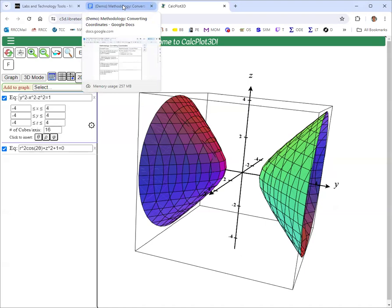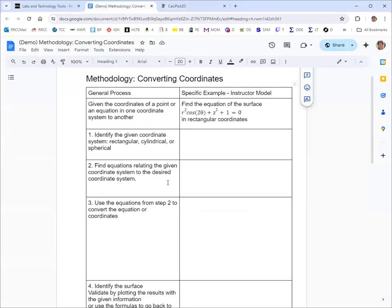So there's our hyperboloid of two sheets and we've converted the coordinate system correctly. So that wraps up converting coordinates methodology, instructor model. Go on to the fill in the blanks in your return examples, and I'll show you those.